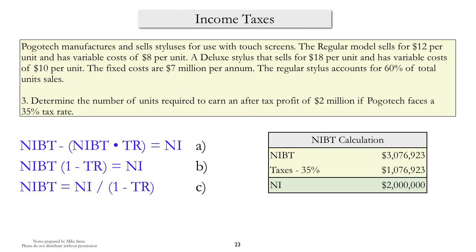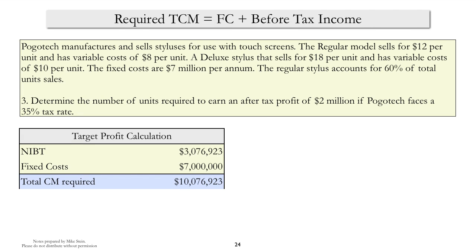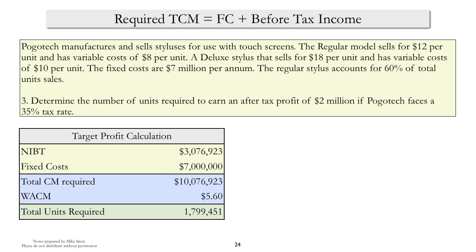Net income before tax represents the amount of contribution margin that PogoTech has to earn. We have the net income before taxes and the fixed cost, so we can calculate the total contribution margin requirement. Dividing by the weighted average contribution margin, we determine the total number of units that have to be sold to hit the $2 million after-tax profit. It's important to remember to calculate the net income before tax, since that represents the amount of contribution margin that must be earned.